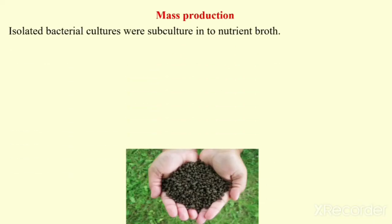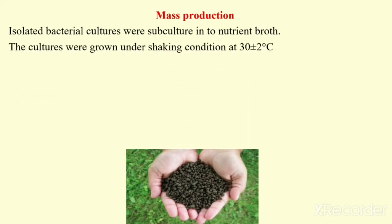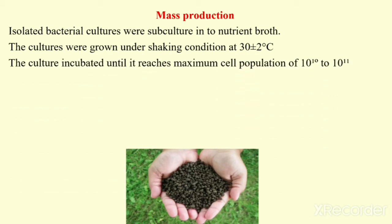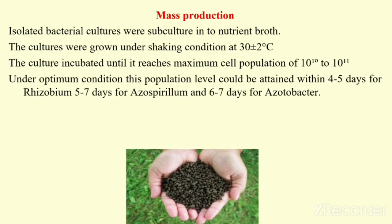Isolated bacterial cultures are subcultured into nutrient broth. Whatever culture is there, we have to subculture it into nutrient broth, then keep that nutrient broth on the shaker at 30 ± degrees Celsius. The culture is incubated until it reaches maximum cell population of around 10^10 to 10^11 microorganisms. Under optimum conditions, this population level could be attained within 4 to 5 days.